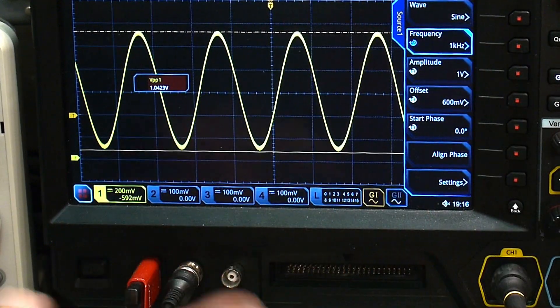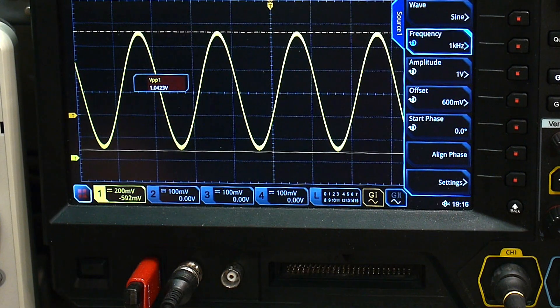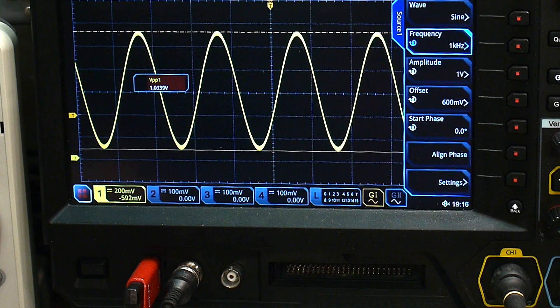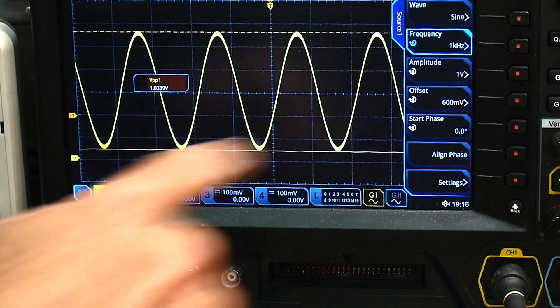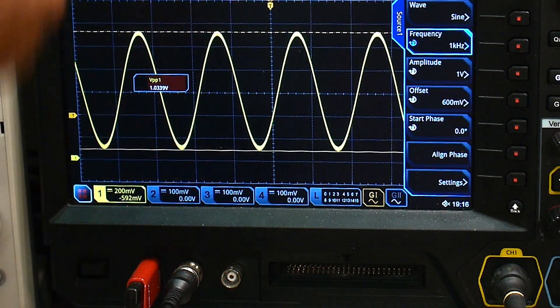So I'm using the generator in the oscilloscope. I'm generating a one kilohertz sine wave with a one volt amplitude and we're measuring 1.03. And then I have an offset of 600 millivolts.